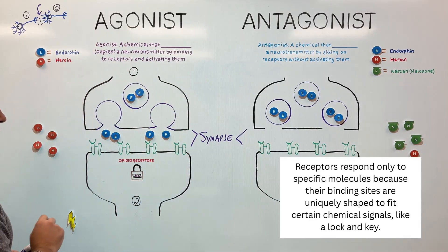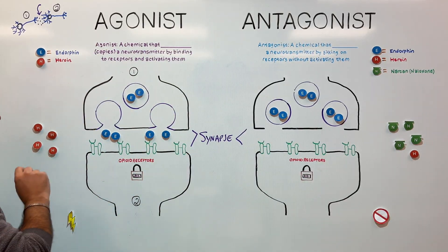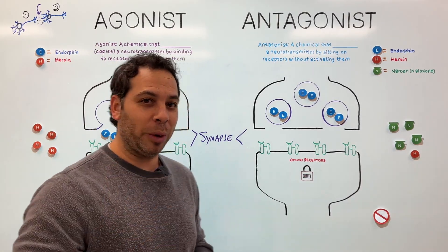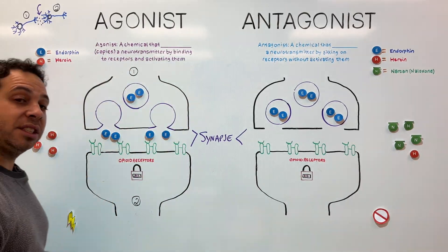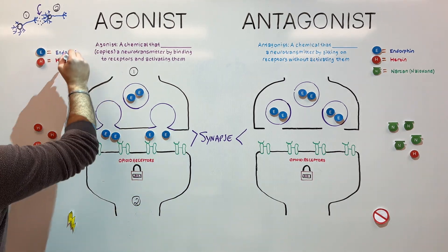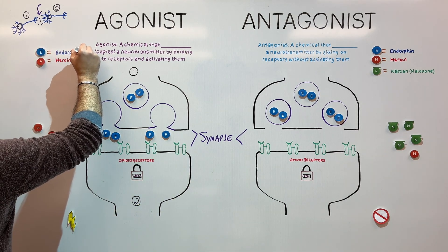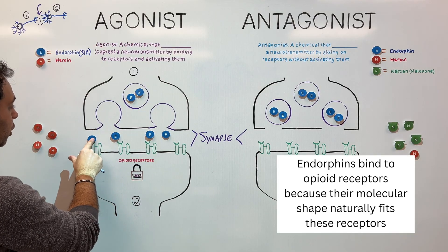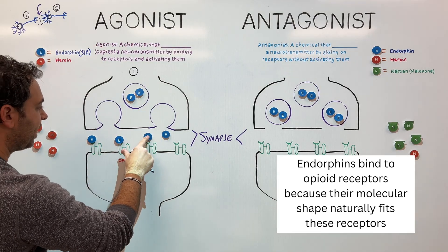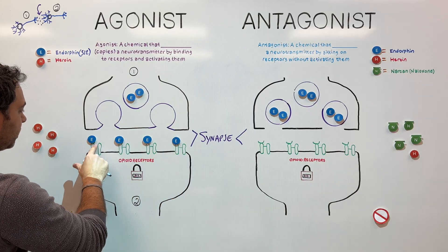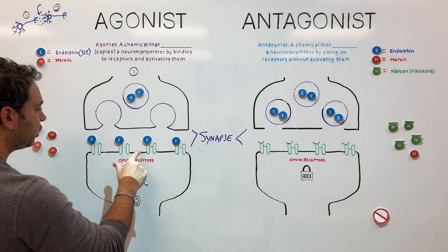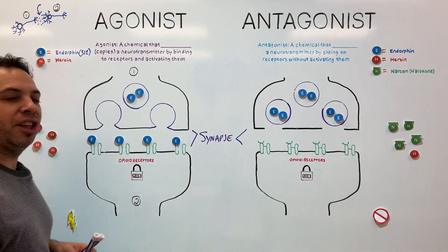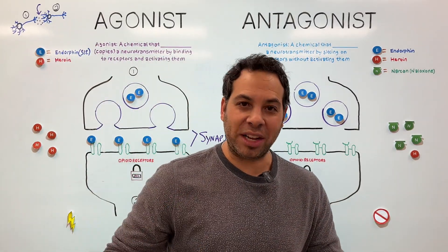In this case, we have opioid receptors, and the code is 312 — I'm from Chicago, so that's the area code. You know who also has the code 312? Endorphins. Because they know that code, they can bind to those receptors and activate them — it's like a lock and a key. Once they know that code, the receptor opens, sodium rushes in, and we activate the neuron. This is a normal chemical process.